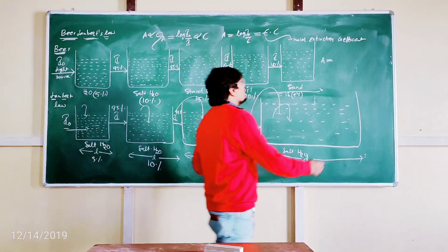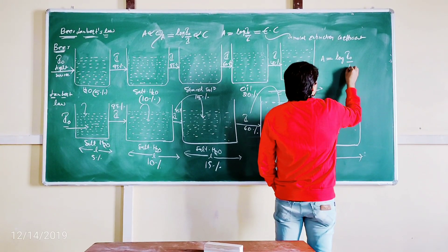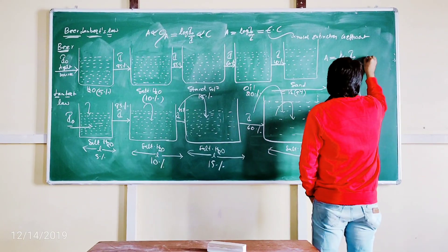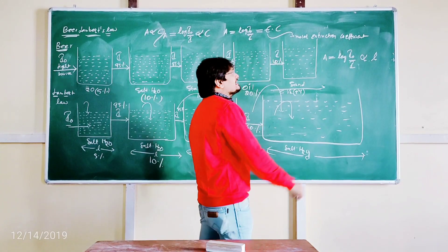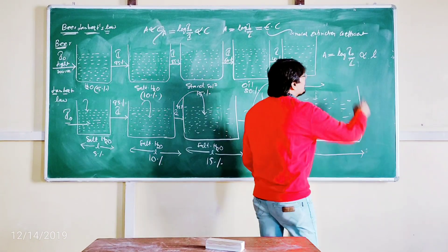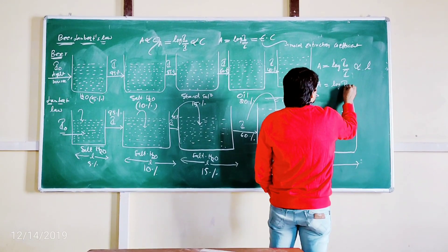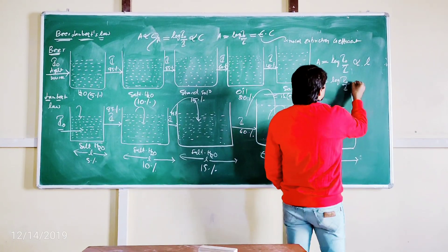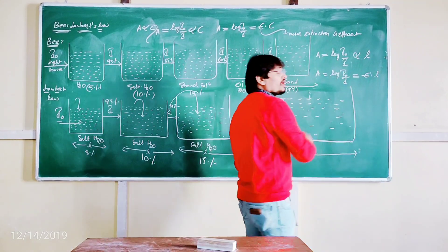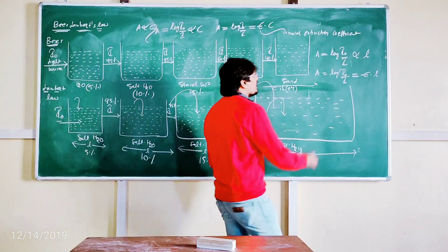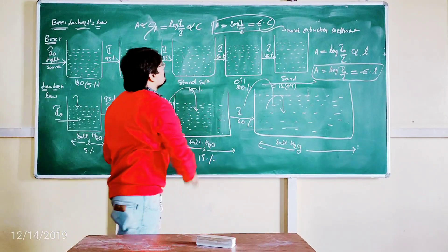So A = log(I₀/I), and here it is directly proportional to L, where L is the thickness of the absorbing medium. So A is absorbance, I₀ is incident light, I is transmitted light. Removing proportionality: A = ε·L, where ε is the molar extinction coefficient — same as in Beer's Law. In Beer's Law, concentration C comes into picture, whereas in Lambert's Law, L — path length or thickness of the absorbing medium — comes into picture.